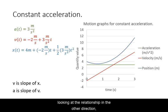However, looking at the relationship in the other direction, notice that the slope of the velocity at all points will be the value of the acceleration at that time. When acceleration is constant, the slope of the velocity graph will also be constant.